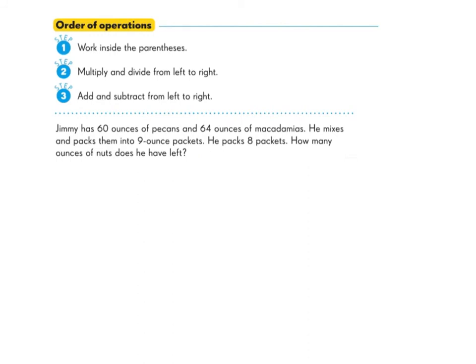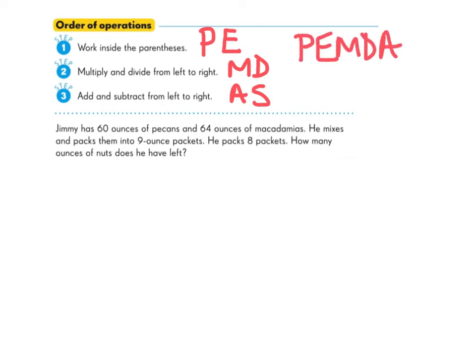Before we build our last numeric expression, let's review the steps in order of operations. First, we work inside our parentheses — please. Exponents will come next, but we'll learn about those later. Then we multiply or divide from left to right — my dear. Then we add and subtract from left to right — Aunt Sally. You might hear me call this PEMDAS: please excuse my dear Aunt Sally. P-E-M-D-A-S: parentheses, exponents, multiply and divide, add and subtract, working from left to right.